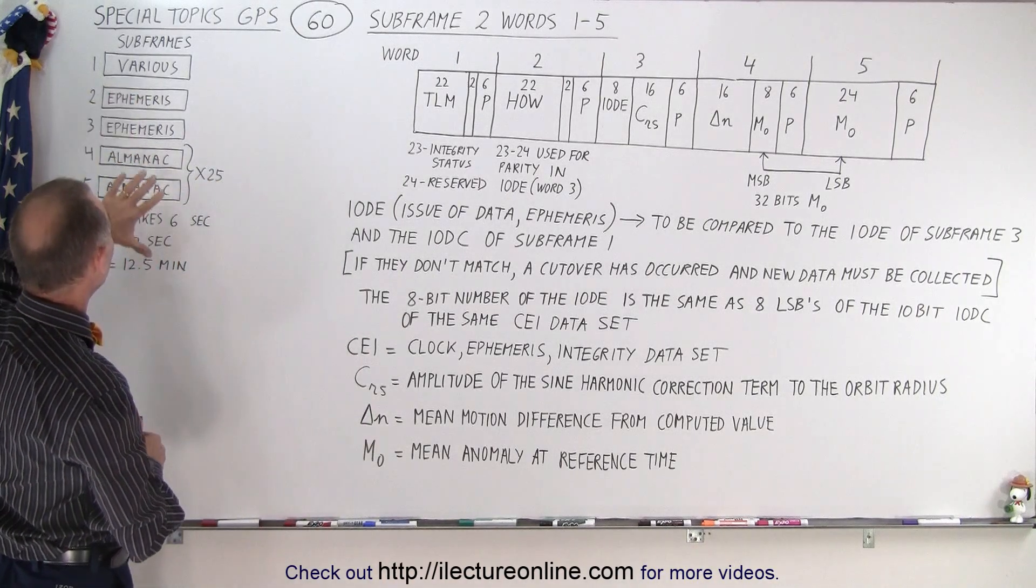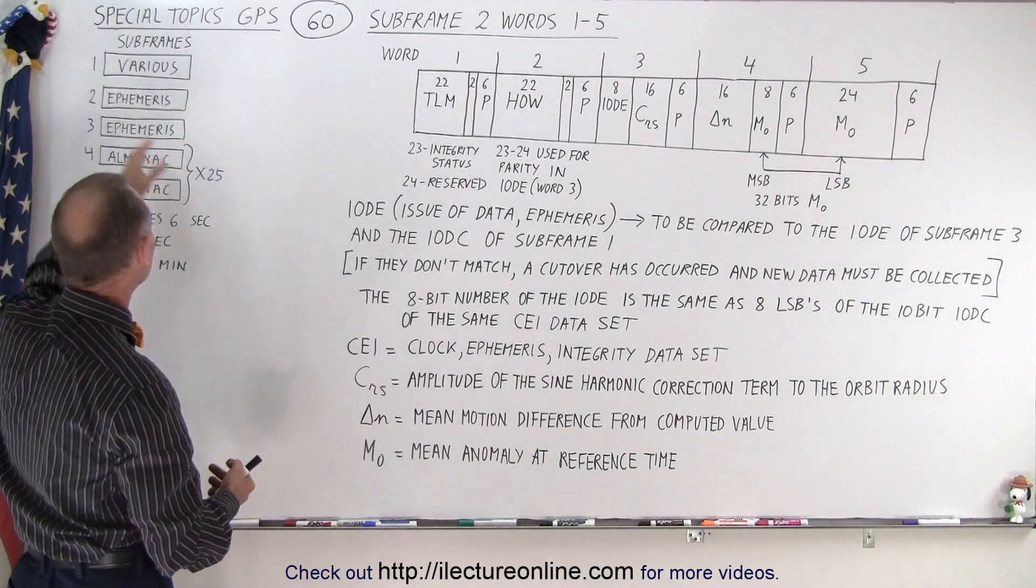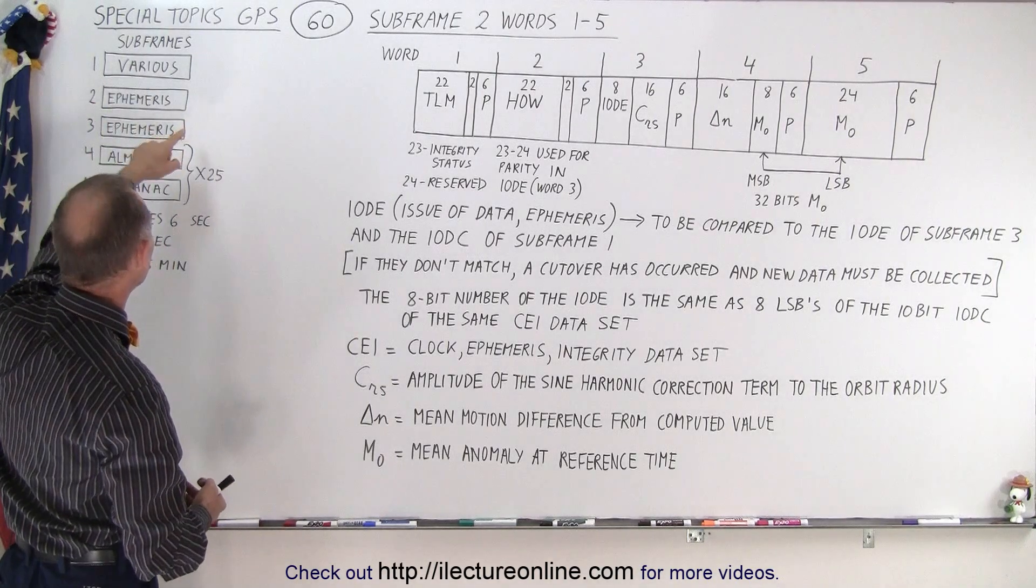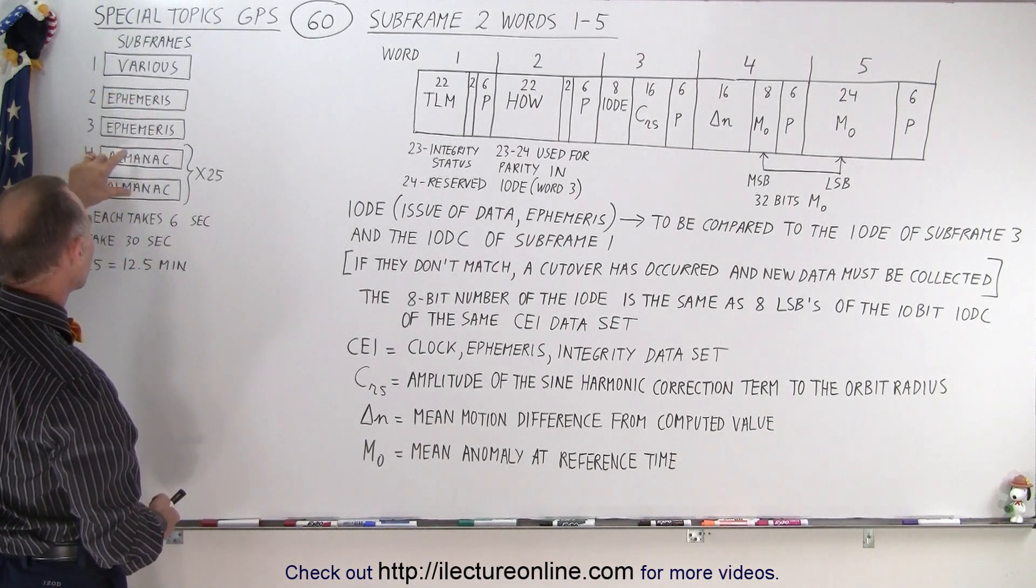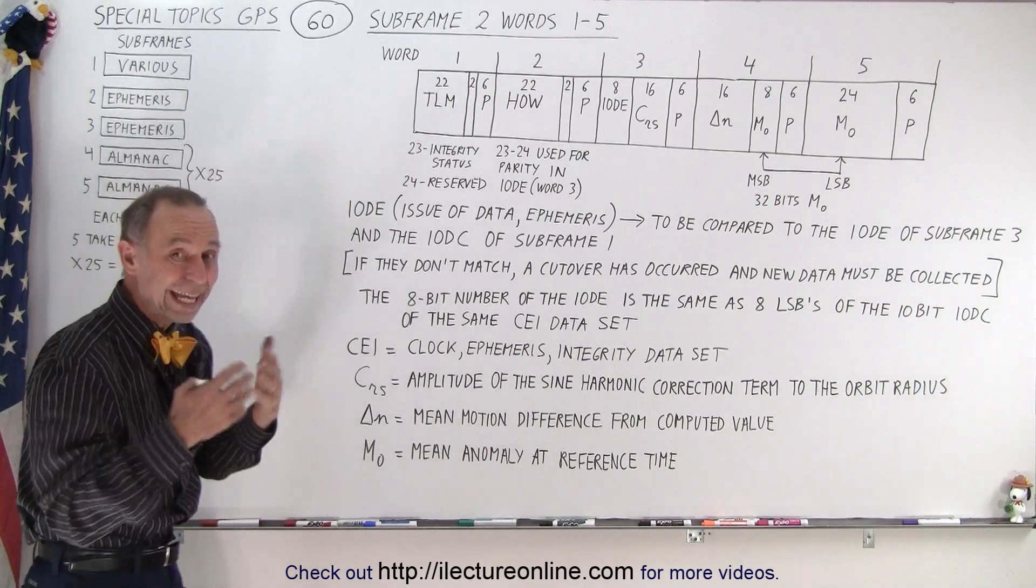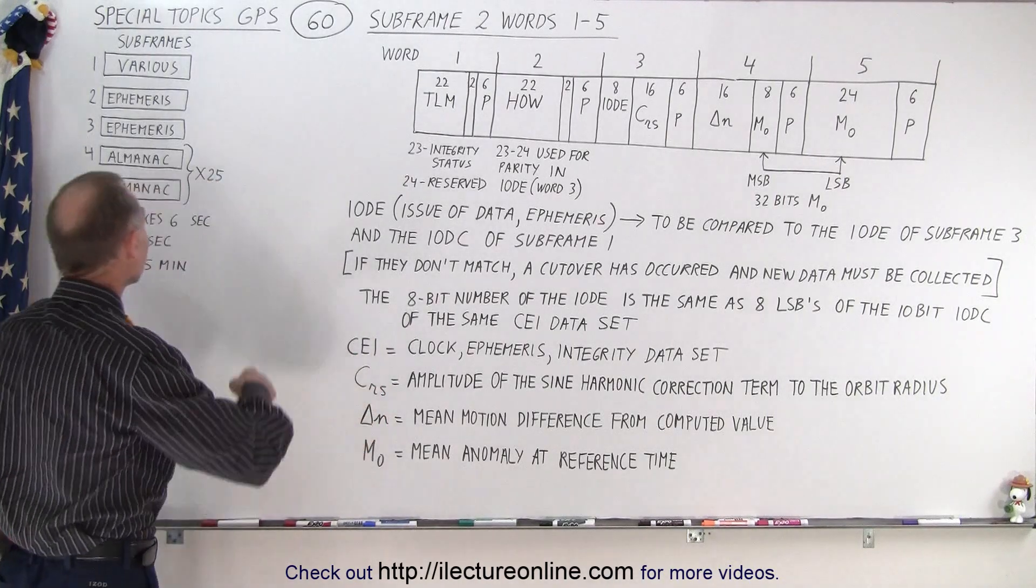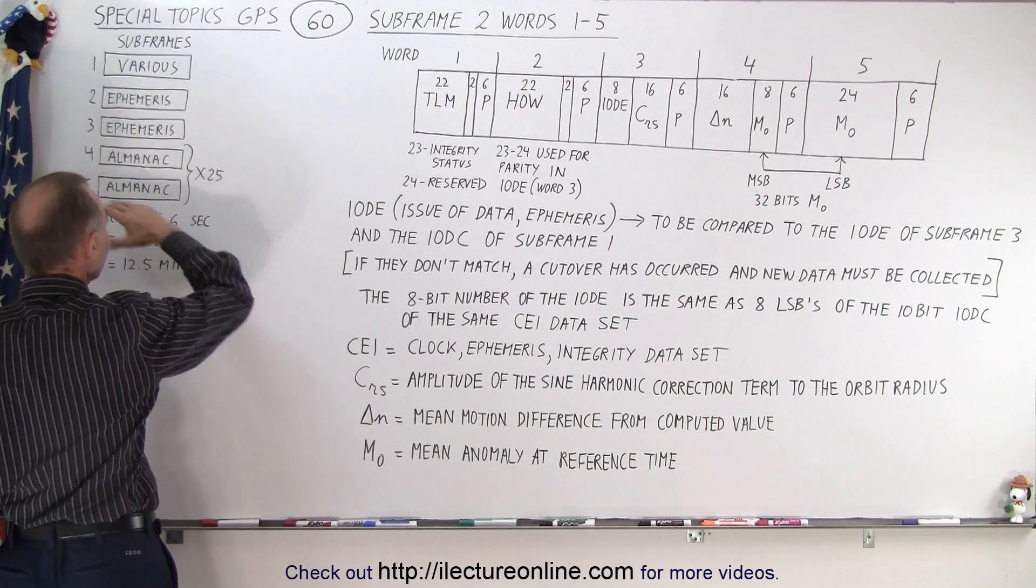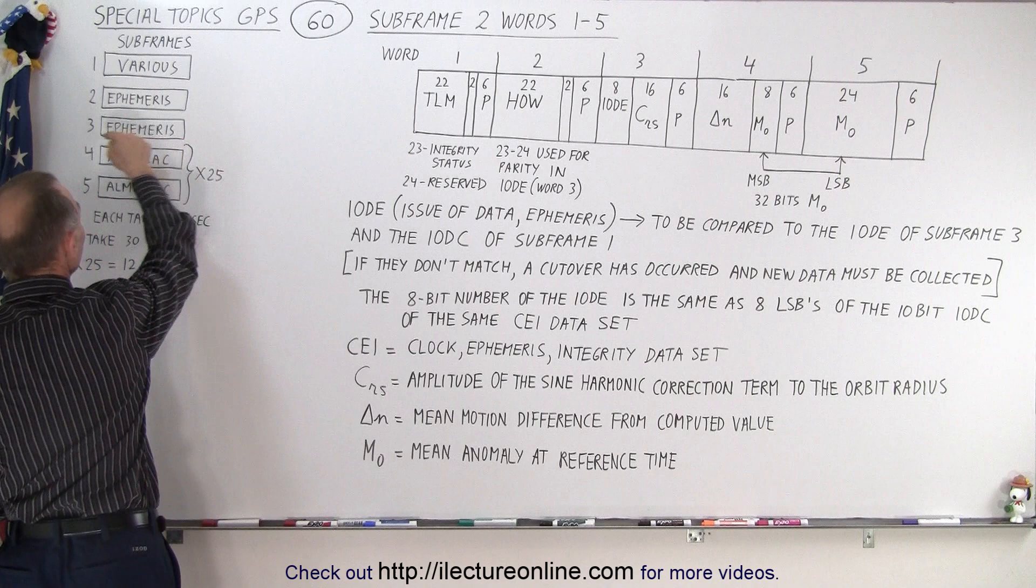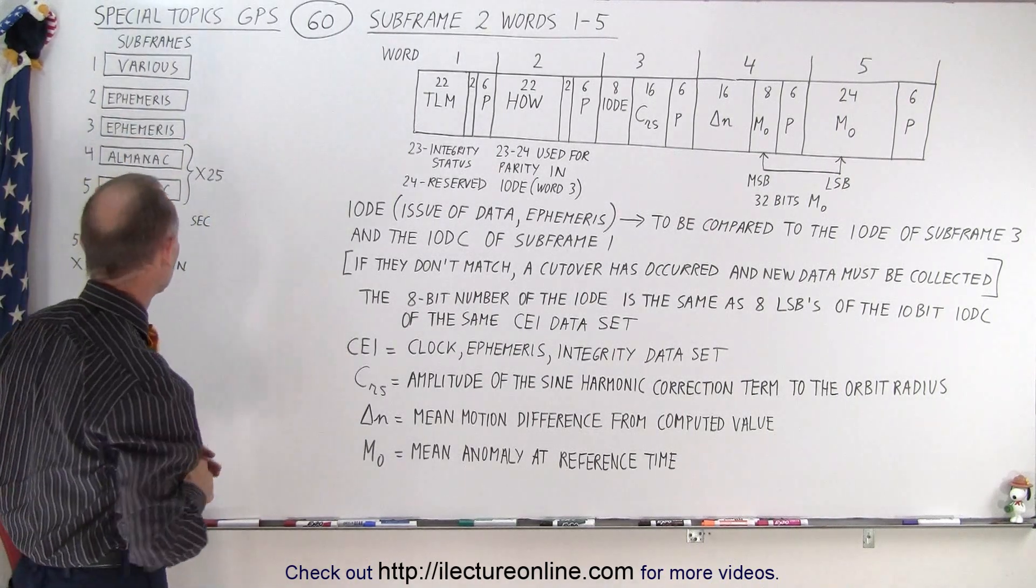So if you look at the 5 subframes, subframe 1 which we've now covered in great detail has all kinds of various parameters. Subframe 2 and 3 have the ephemeris parameters. Subframe 4 and 5 have the Almanac parameters. But there's so much data there because it is for the entire constellation that we have to send 25 frames containing the 5 subframes before we have all of the Almanac data for the entire constellation sent to us.